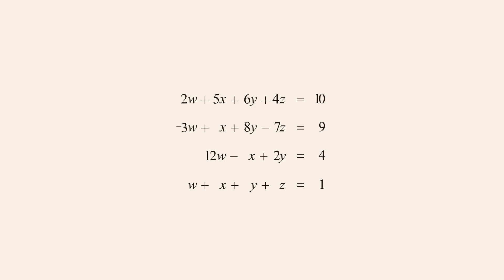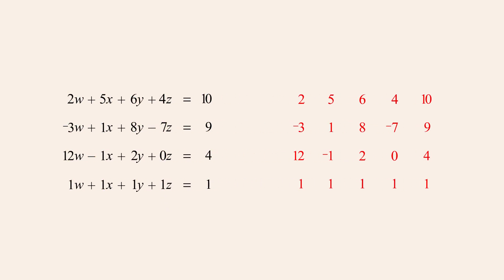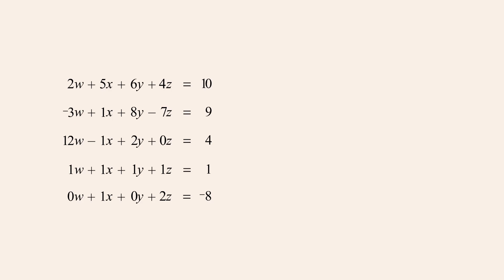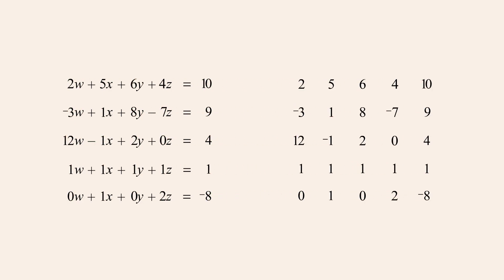To create an augmented matrix for a system of five linear equations in four variables, and for a system of four linear equations in four variables, we fill in the coefficients of one and any missing terms, collect the coefficients and constants, and enclose them in brackets with a vertical line. As a final example, we create an augmented matrix for a system of five linear equations in four variables: we again fill in the coefficients of one and the missing terms, collect coefficients and constants, and create the augmented matrix.